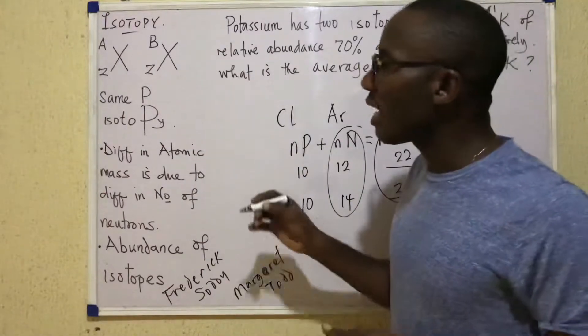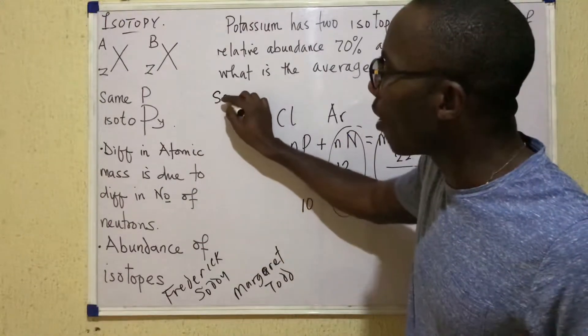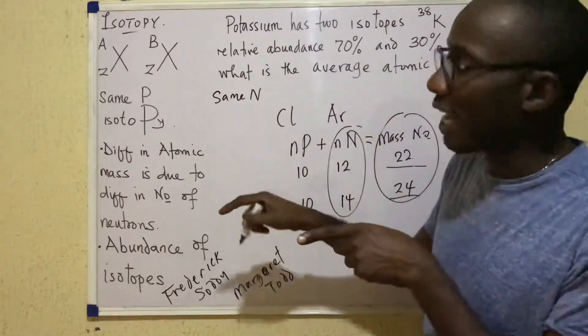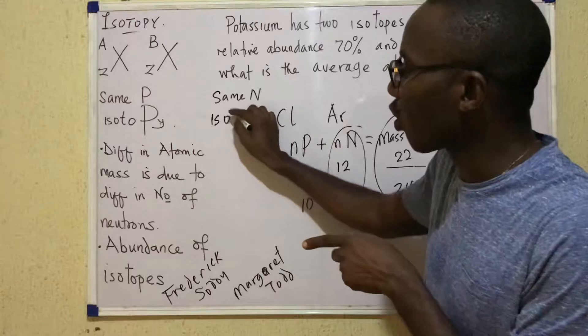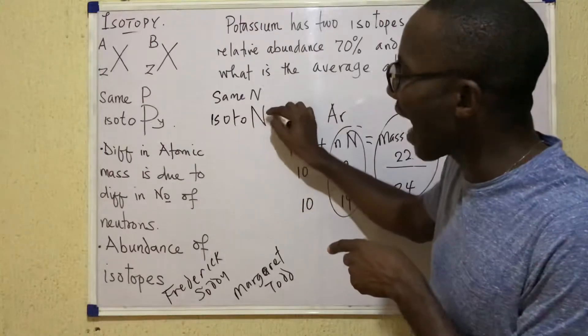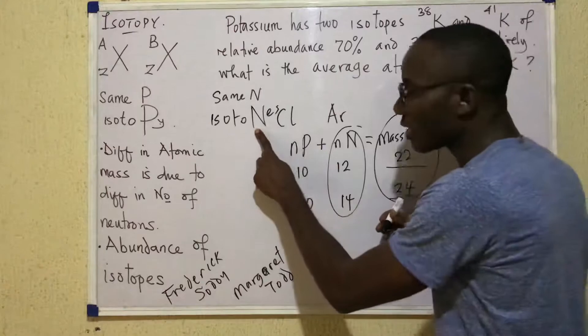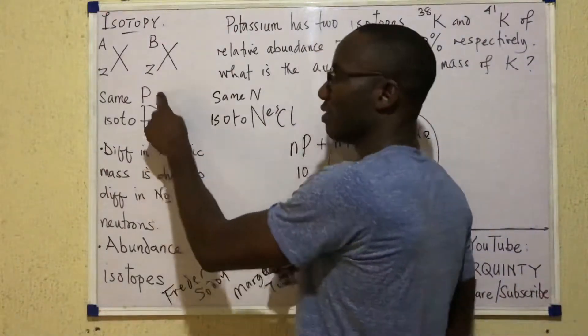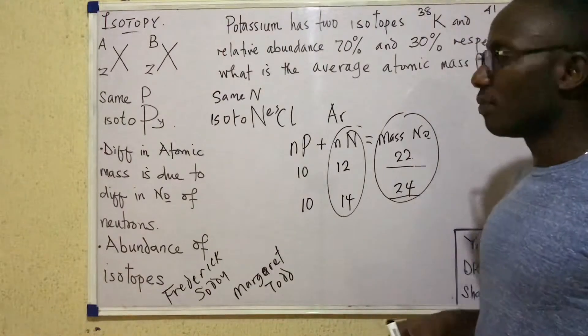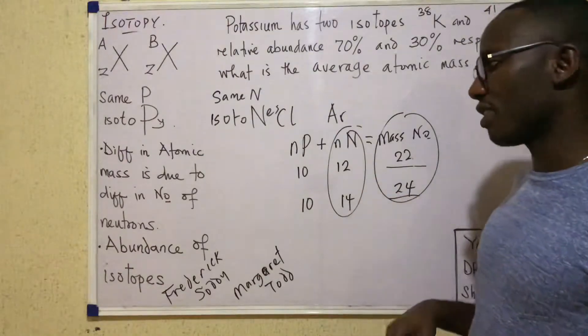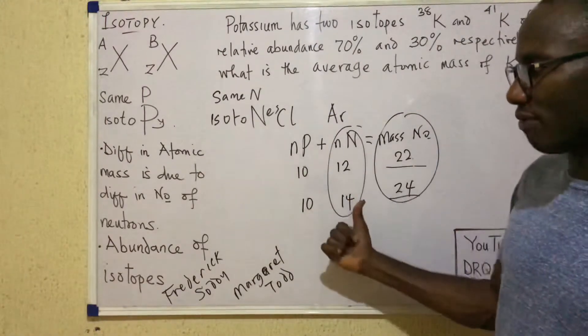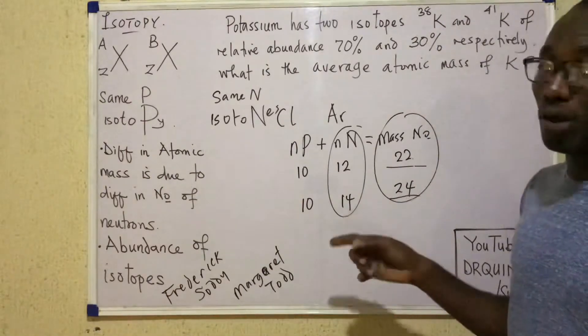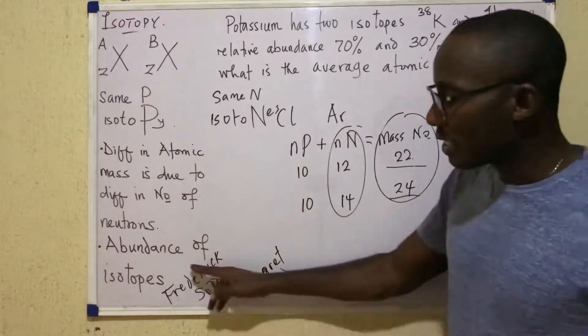There's a similar case where the number of neutrons are the same but the number of protons are different. In that case, we will call the two atoms isotones. So isotones have the same N, whereas isotopes have the same P. Now leaving that definition, this point is what I've just made here, that the difference in atomic mass is due to the difference in the number of neutrons.